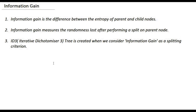Information gain measures the randomness lost when we perform a split on any given node. Higher the randomness lost will mean more chances of getting a pure or near-to-pure nodes after splitting, which means that the decision tree is able to arrive at a decision. Randomness is measured in terms of entropy, and hence information gain is the difference between the entropy of the parent node and the entropy of the child nodes. If we create an entire decision tree by considering information gain as a criterion, the type of tree obtained is called an ID3 tree, or iterative dichotomizer 3 tree.